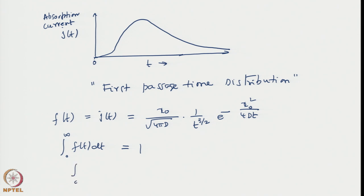However, other moments — for example, if you want to know the mean time of contacting the absorber — if you ask what is the mean time, that quantity is very easily shown to be infinity. That means this is a distribution function which is normalizable but does not have a first moment.